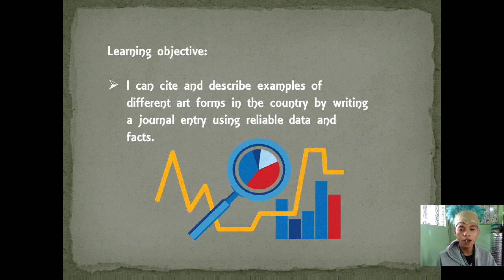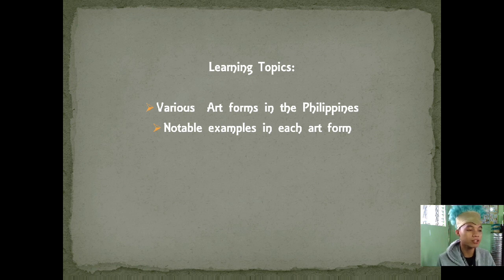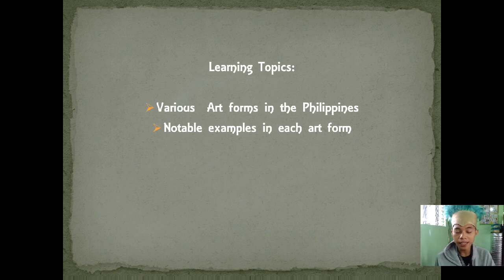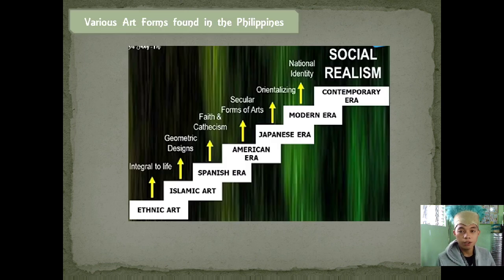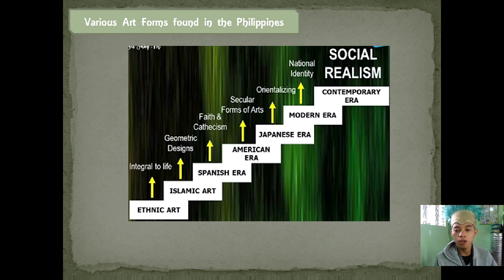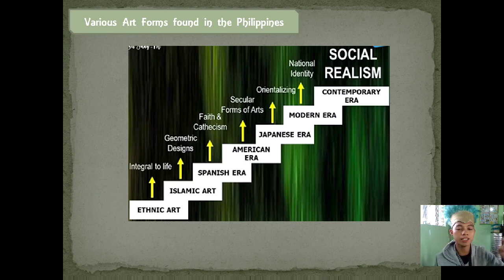Today we'll talk about various art forms found in the Philippines and the notable examples. Let's have a recap of this diagram, which shows how the arts developed in our country — from ethnic art, to Islamic, Spanish era, American, Japanese, modern era, and up to the contemporary era at the top.